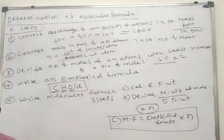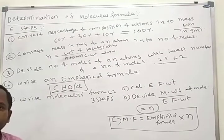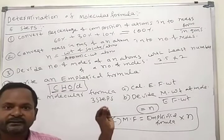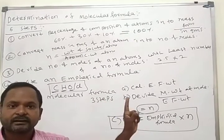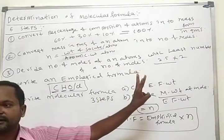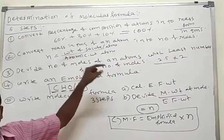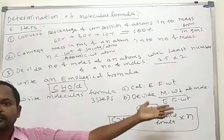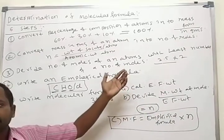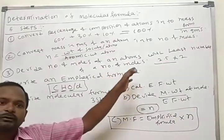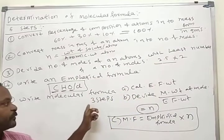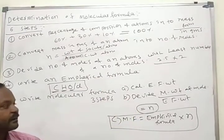Remember these steps, then we will move into the calculation. What are the steps? Five steps. First: convert percentage into grams, make 100%. Second: convert mass into number of moles. Third: divide by the least number of moles. Fourth: write empirical formula. Fifth: write molecular formula — using the three sub-steps.